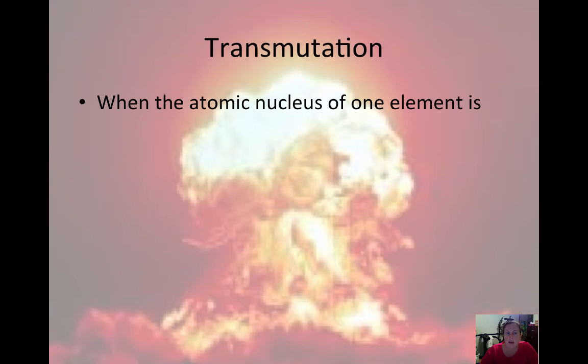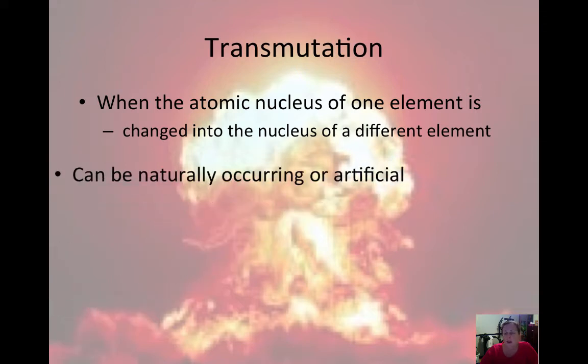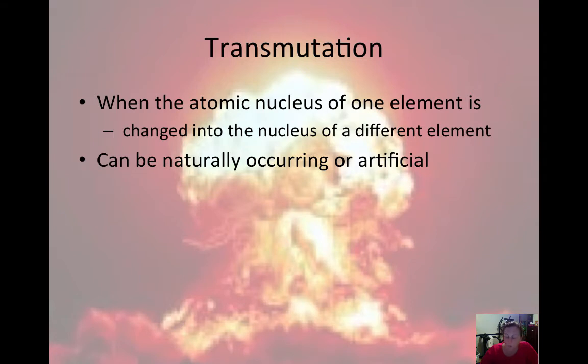So transmutation is when the nucleus of one element changes into the nucleus of a different element, and we've been watching this over the last couple of days doing our nuclear equations. It occurs when we have a beta, alpha, or positron emission, and this can happen naturally by beta, alpha, and positron emission, or artificially, which we'll talk about in a minute.